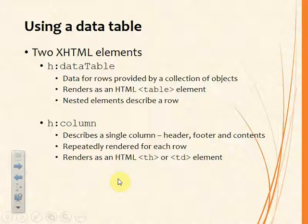The binding of this data table to a property in a managed bean will need to produce some kind of collection, for example an ArrayList. That collection will then provide the objects to be displayed within the table. Each object will occupy one row, and we will identify in the columns the various attributes or properties of those objects to be displayed in each column.